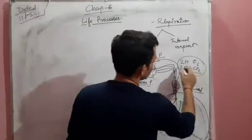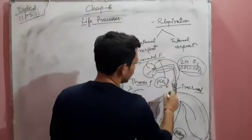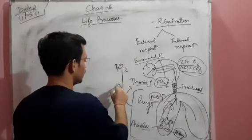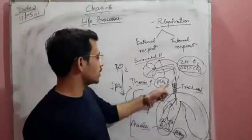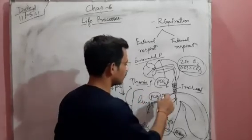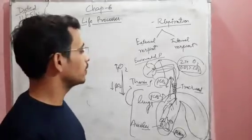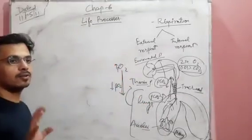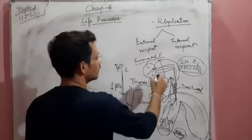The environmental pressure of CO2 is low and in the thoracic area the pressure of CO2 is high. So the flow of CO2 is from high to low — that is why when we breathe out, carbon dioxide comes out of our body, and when we breathe in, oxygen enters the bloodstream. This movement of oxygen and carbon dioxide takes place because of environmental and thoracic pressure differences.